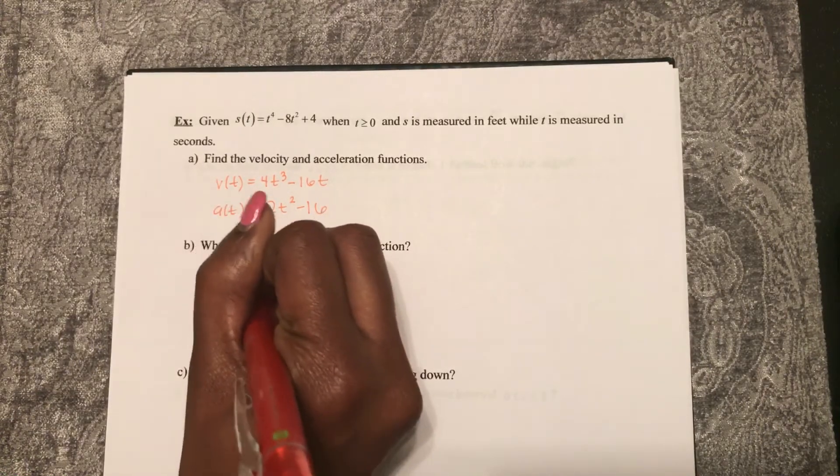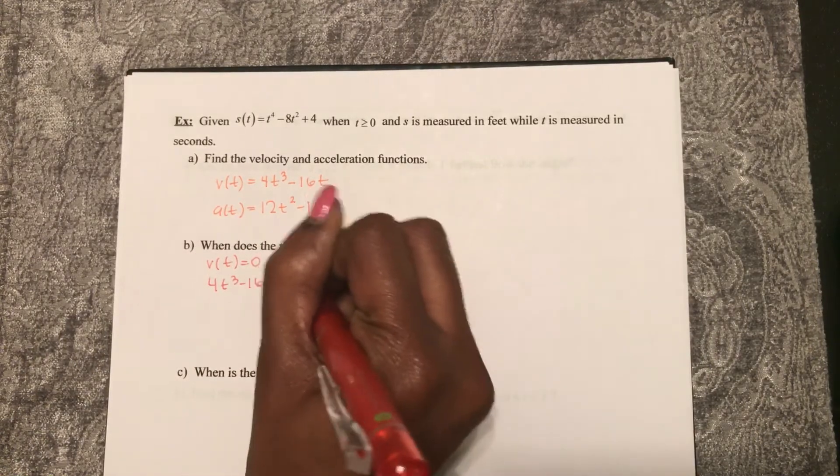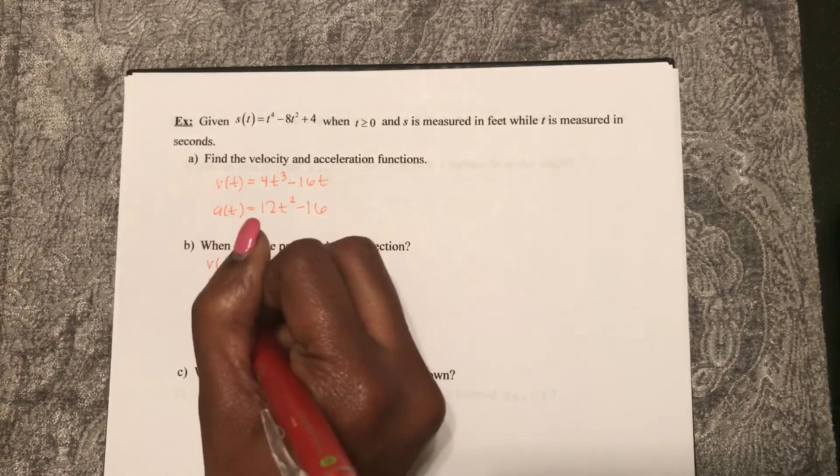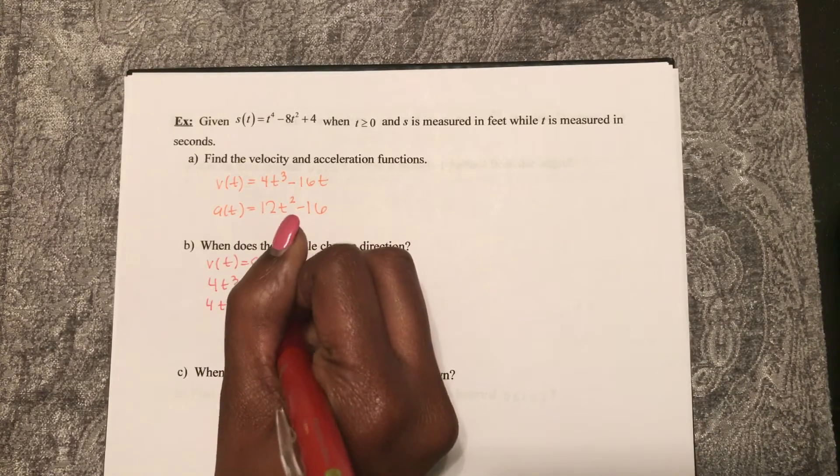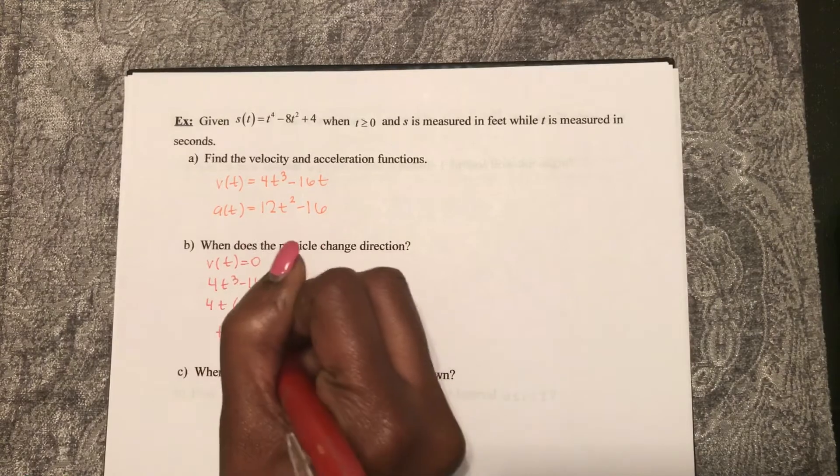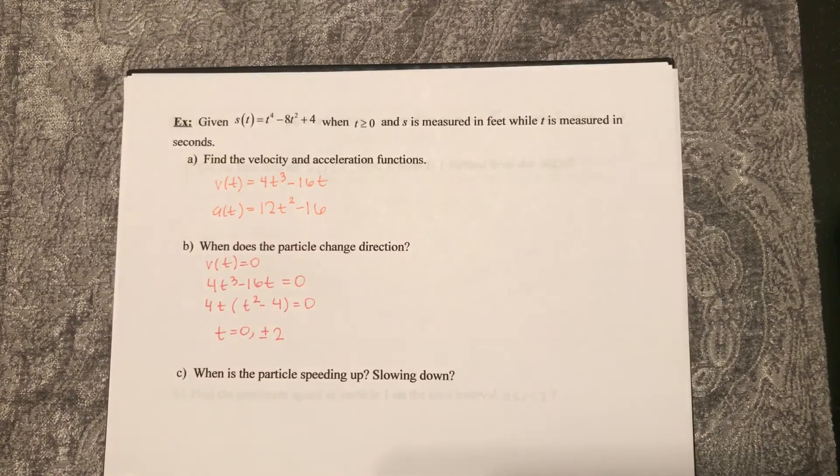Well, that's when 4t cubed minus 16t equals 0. I can factor out a 4t and that leaves t squared minus 4 equals 0. So t equals 0 or plus or minus 2 seconds.